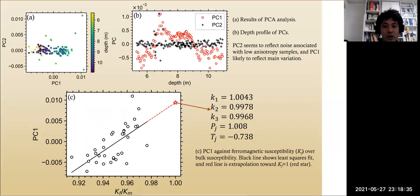We modeled the variation of AMS fabric shapes and estimated the AMS of pure biogenic magnetite. The estimate corresponds to an oblate and relatively weak fabric.